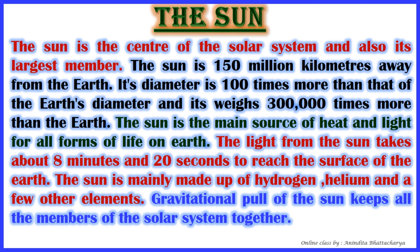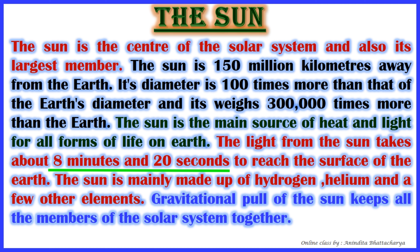The Sun weighs 3,000 times more than the Earth. The Sun is the main source of heat and light for all forms of life on Earth. The light from the Sun takes about eight minutes and 20 seconds to reach the surface of the Earth. Note: in your book it says eight minutes, but the actual time is eight minutes and 20 seconds.